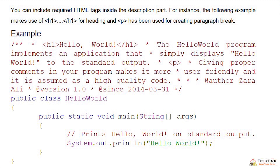For instance, the following example makes use of the header1 tag for heading, and the paragraph tag p can also be used. This has been used for creating a paragraph break in the JavaDoc comment description.